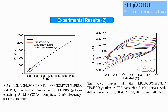Electron transfer resistance was observed through stepwise modification of the anodic electrode using EIS. EIS was recorded in 0.1 mol PBS containing 5 mM ferrocyanide solution. The laser induced graphene showed higher charge transfer resistance (Rct) than any modified electrode. A diffusion-controlled process was also observed using cyclic voltammetry at different scan rates.